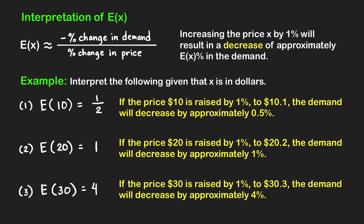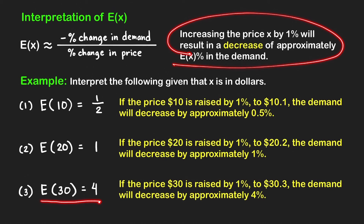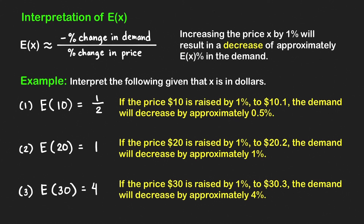Lastly, how do we interpret e of 30 equal to 4? Using this interpretation, if we raise the price by one percent to $30.30, then the demand will decrease by approximately 4%. This means that a small percent increase in the price would result in a large percent drop in the quantity demanded, so it is not a good idea to increase the price even by just a small amount.